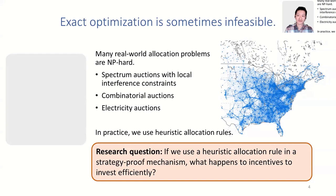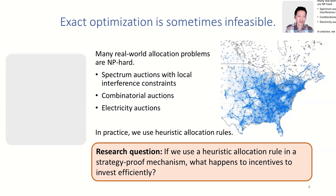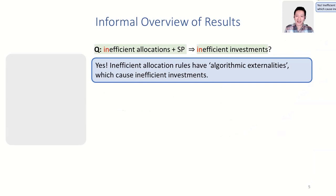This doesn't mean we stop running mechanisms. In situations like these, we use heuristic allocation rules — rules that are not exactly optimal, but they run quickly and seem like a good idea. Our research question is: if we take a heuristic allocation rule and embed it into a strategy-proof mechanism, what happens to incentives for investment? Do you still have incentives for bidders to invest efficiently, even though you're running something that's not quite VCG?